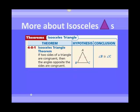Now we have a theorem about isosceles triangles. That theorem says that if two sides of a triangle are congruent — that makes it isosceles — then the angles opposite those sides are also congruent. So if we're given that AB is congruent to AC, then we should be able to show that angle B is congruent to angle C, meaning the base angles are congruent.